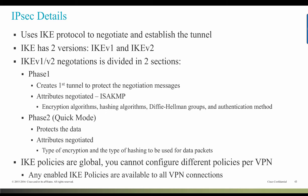During Phase 2 of this negotiation, or what we call Quick Mode, IKE establishes the SAs for other applications such as IPsec. Both phases use proposals when they negotiate a connection. IKE policy objects define the IKE proposals for these negotiations. The objects you enable are the ones used when peers negotiate a VPN connection. IKE policies are global, meaning any enabled IKE policies are available to all VPN connections.